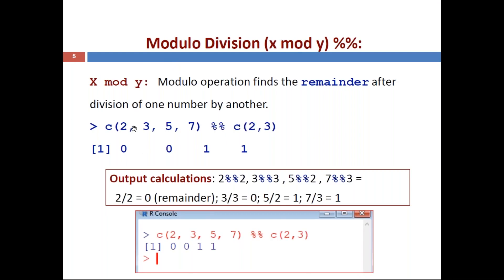If the right-side vector's length does not match the left side, you will get a warning or error, similar to what we discussed earlier. That completes the modulo division operation.